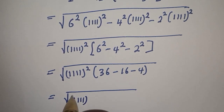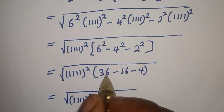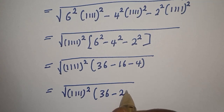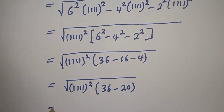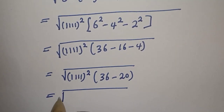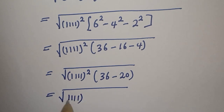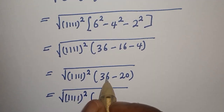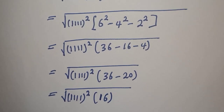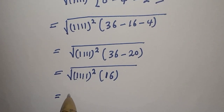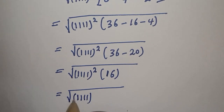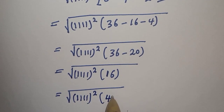Square root of 1111 squared bracket 36 minus 20, that is 16. Equal to square root of 1111 squared bracket 16, which equals square root of 1111 squared times 4 squared.